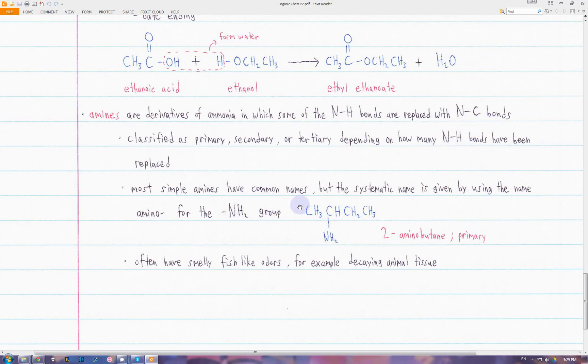Many simple amines have common names, but if we want to give the systematic name, we pretend that the amine is basically a substituent group, and we use the name amino for this group. For example, over here we have a chain of four carbons, so this parent alkane is butane. We have an NH2 attached to this second carbon, so this molecule is 2-aminobutane. It's a primary amine because only one of these NH bonds is broken to form a bond with the carbon here. It still has two of its hydrogens left. Amines often have a smelly, fish-like odor, for example the odor in decaying animal or human tissue.